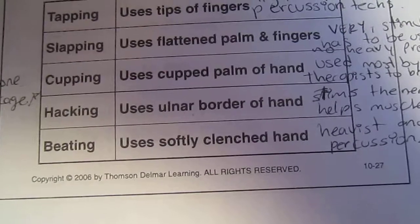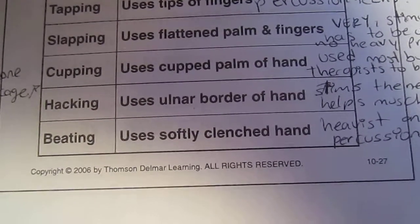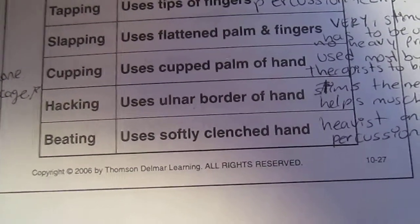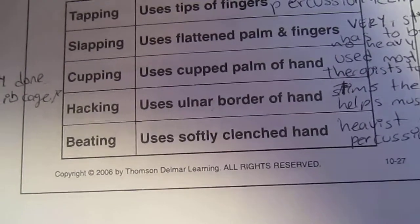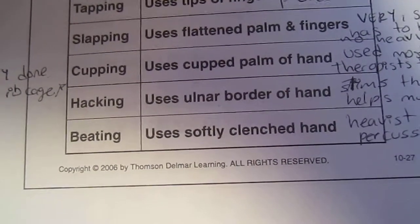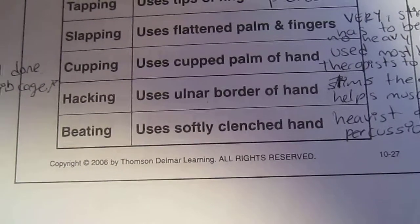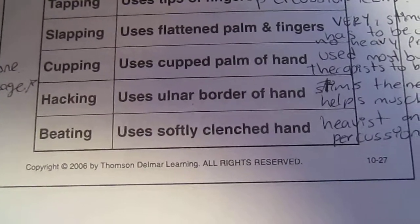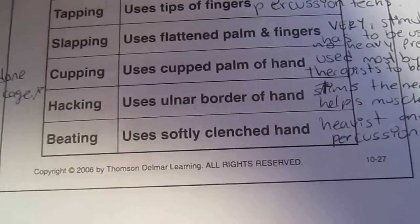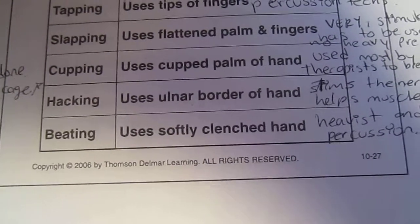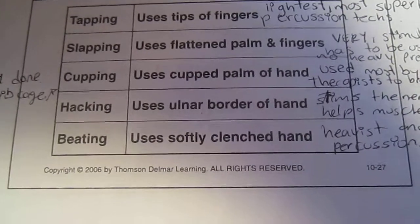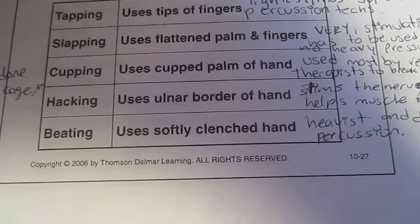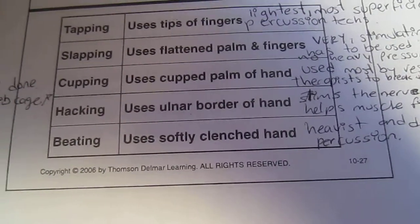Cupping uses the cupped palm of the hand. It is used most by respiratory therapists to break up lung congestion, applied mostly over the rib cage. Hacking uses the ulnar border of the hand and stimulates the nerves and helps muscle tone. Beating uses a loosely clenched hand and is the heaviest and deepest of the percussion techniques.